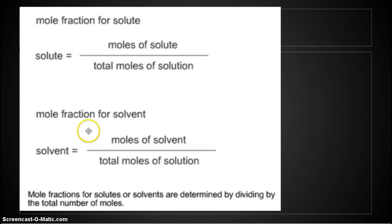Now what if I wanted to find the mole fraction for solvent? Well, the mole fraction of the solvent equals the moles of solvent divided by the total moles of solution. Either way, for total moles of solution, it's the moles of solvent plus moles of solute. And mole fractions for solutes or solvents are determined by dividing by the total number of moles.